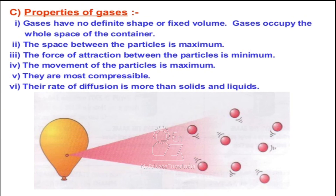The rate of diffusion is more than solid and liquid — the rate of diffusion is the highest for gases. Again, for the same reason: the particles have the least forces of attraction between them, and the spaces between the particles are maximum. So, with so much space and minimum attraction force, all the particles gain kinetic energy and are in constant motion — motion leads to diffusion, which is intermixing. So this was about the properties of gases.